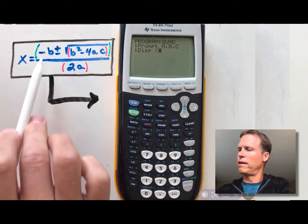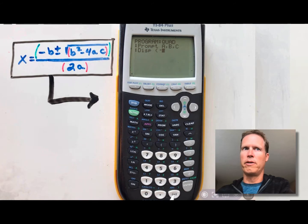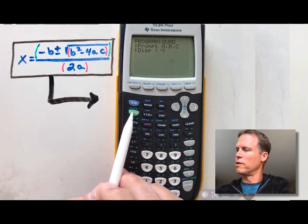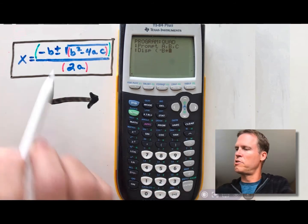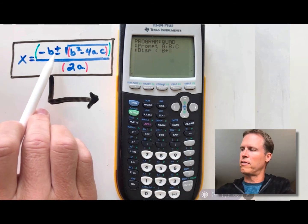So we're going to go left parentheses, and then we have negative B. So you're going to go negative down here, and then alpha B, and then you're going to go plus, because there's two answers. We have to calculate it twice, once with a plus, and then once again with a minus.